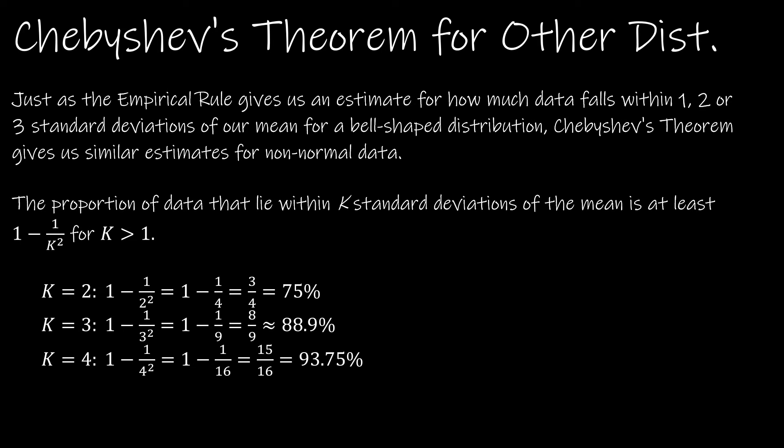So what happens if we have data that is not bell shaped? It's not normal. Well, we can then instead use Chebyshev's theorem. And Chebyshev's theorem works when our data is not normal. And that says that if we want to know the proportion, which proportion is just a fancy name for what percent of data that lie within K standard deviations of the mean is at least 1 - 1/K² for K greater than 1.